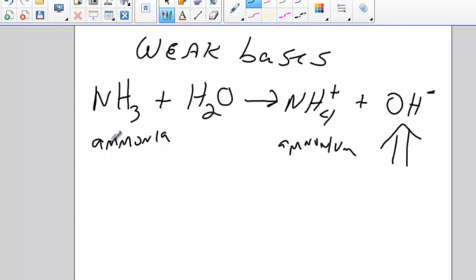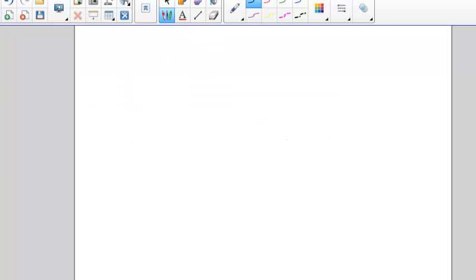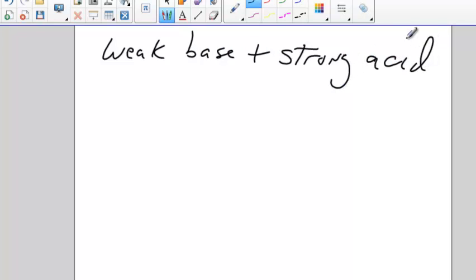So this is what happens to ammonia in water. What happens when I have ammonia plus a strong acid? This is going to be weak base plus strong acid. So here's my weak base, NH3. Strong acid - let's pick HCl. That's about as strong an acid as you're going to get.